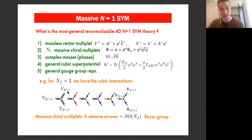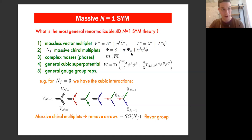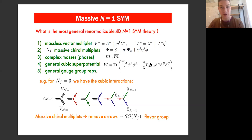What is the most general renormalizable four-dimensional N equals one super-Yang-Mills theory? First, we have a massless vector multiplet with a gluon and a gluino plus its conjugate. We can add N_F massive chiral multiplets — assembled into long multiplets with two bosons and two fermions. The fermion is a Majorana spinor. We can also include complex masses and a general cubic superpotential compatible with renormalizability. I'm working with color-stripped objects, and we consider general gauge group representations for the matter, with a general tensor T_ABC.